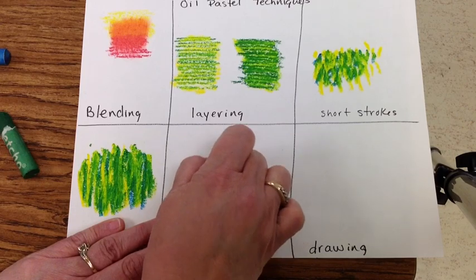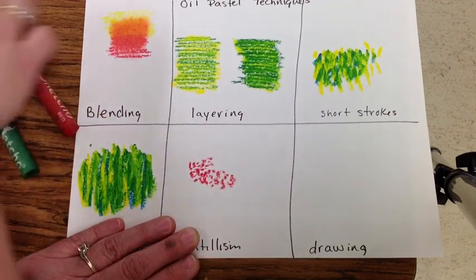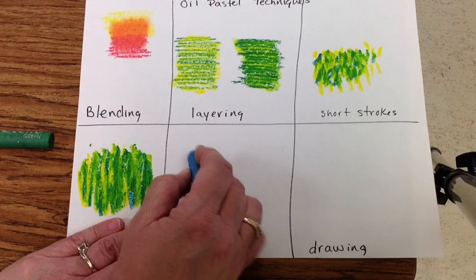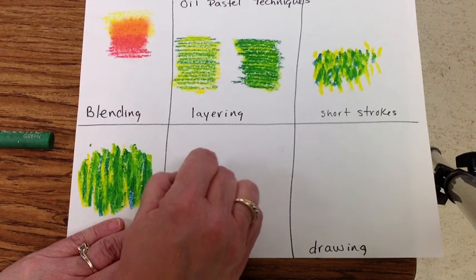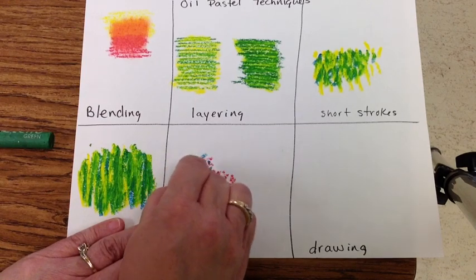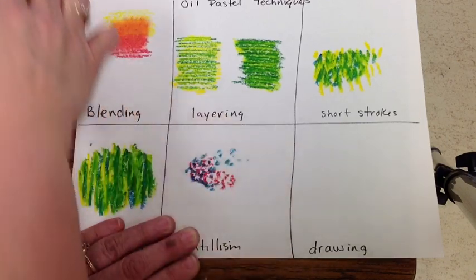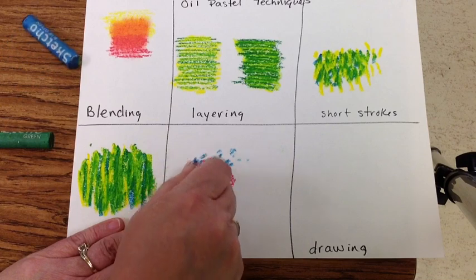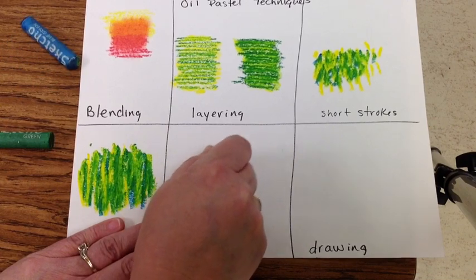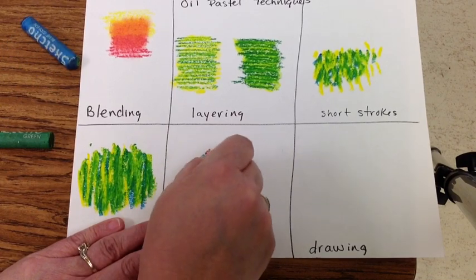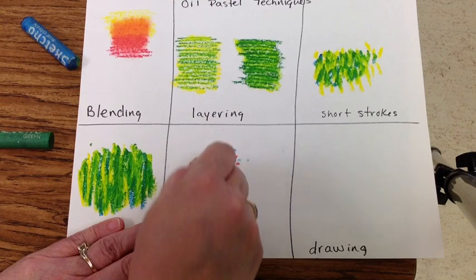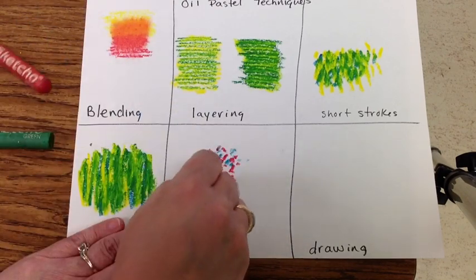The farther apart the dots are, the lighter the area will look. The closer together the dots are for the pointillism, the darker it will look. I could also go back into my red on the other side, away from the blue, and add some light pink. And that would also make it look lighter. So that technique is called pointillism.